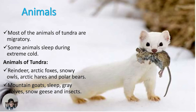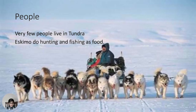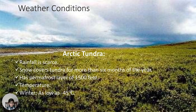Food chain in Arctic tundra: Polar bear — 0.1 percent (top secondary consumer); Arctic fox — 1 percent (secondary consumer); lemmings — 10 percent (primary consumer); producers — 100 percent. Very few people live in tundra. Eskimos do hunting and fishing to get food and use wolves for transportation. Weather conditions in Arctic tundra: Snow covers the tundra for more than six months of the year. The permafrost layer is up to 1,500 feet deep. Winter temperatures can be as low as minus 45 degrees Celsius.